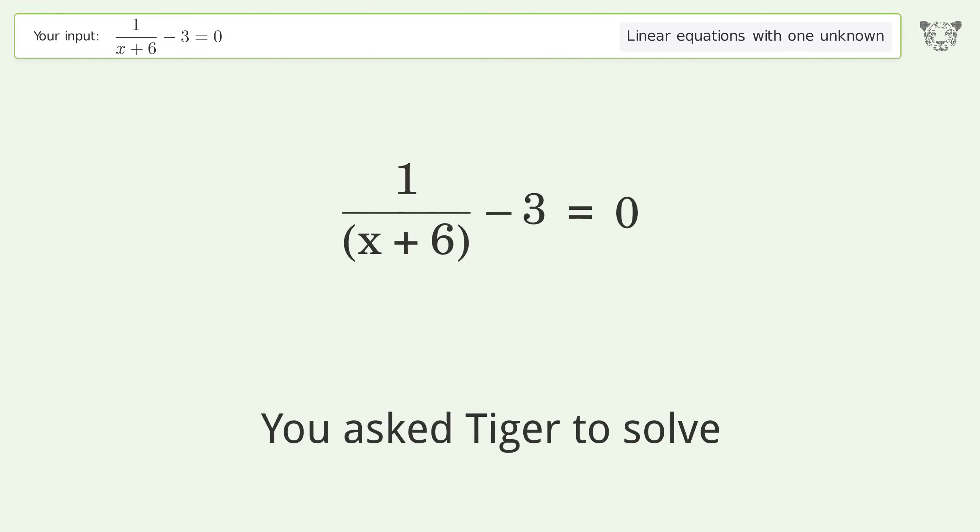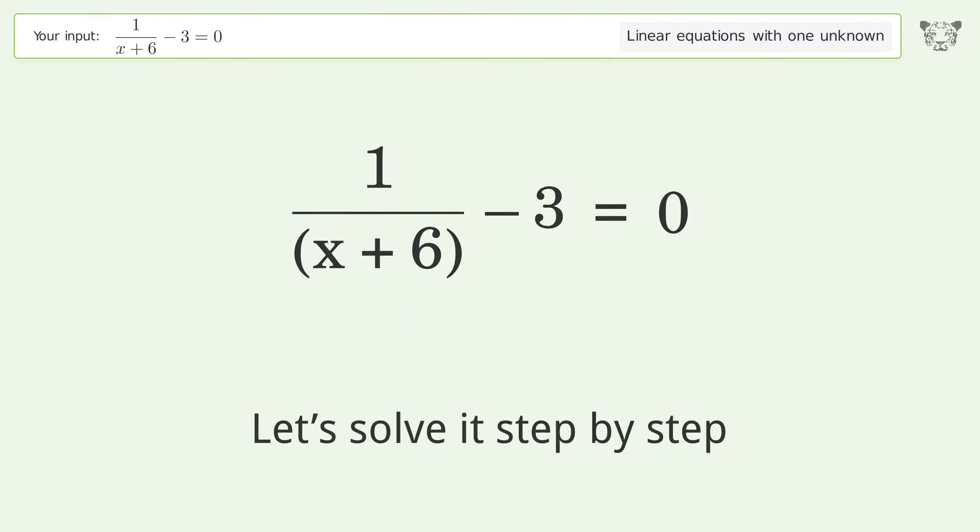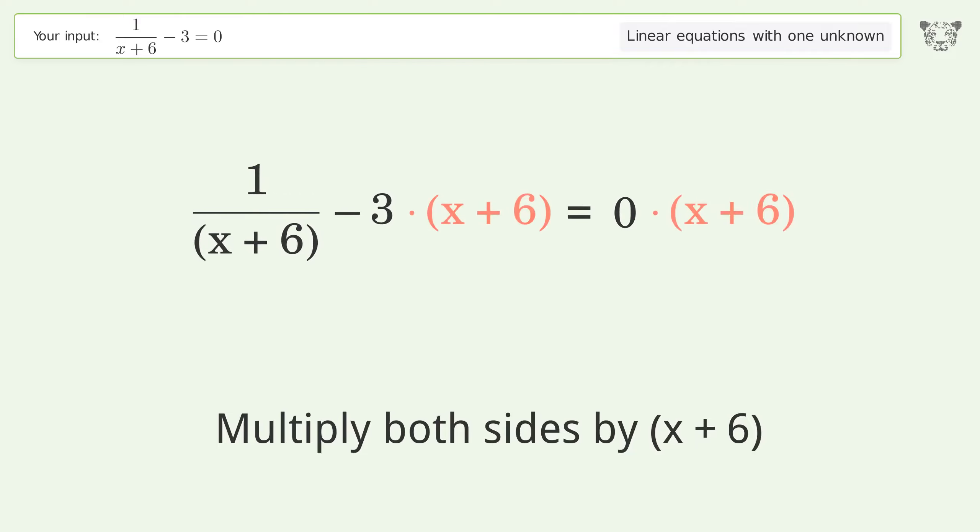You asked Tiger to solve this. This deals with linear equations with one unknown. The final result is x equals negative 17 over 3. Let's solve it step by step. Isolate the x. Multiply both sides by x plus 6, expand.